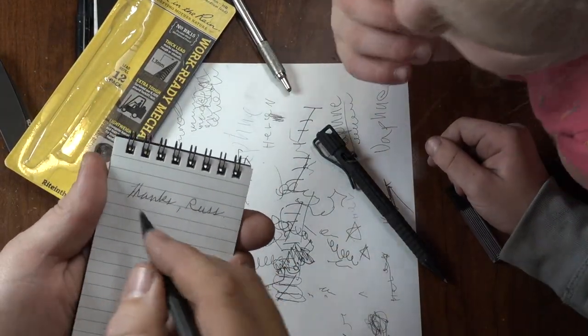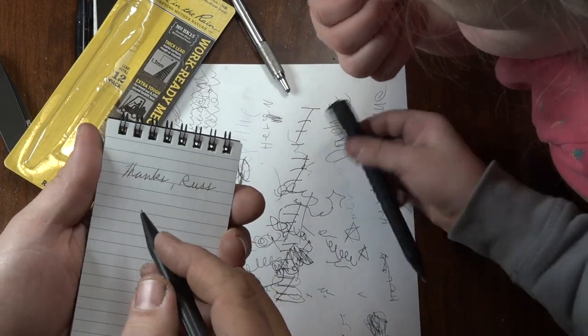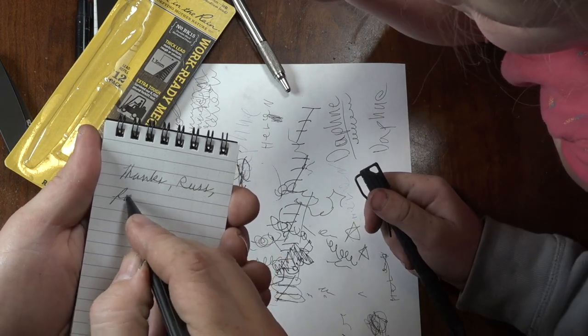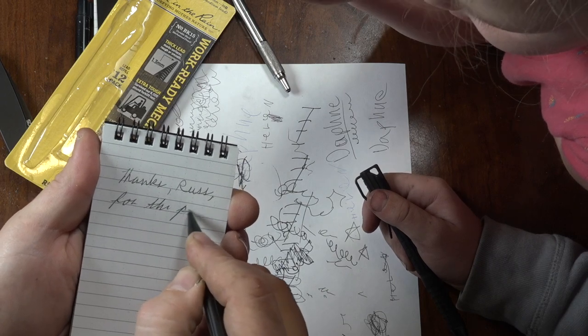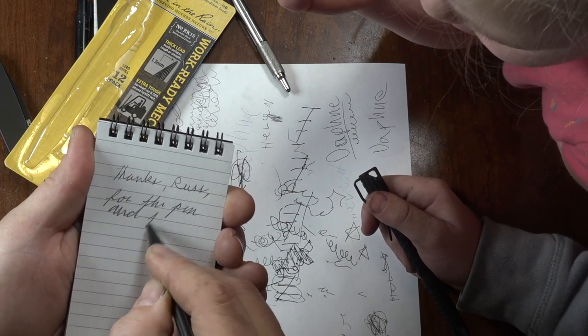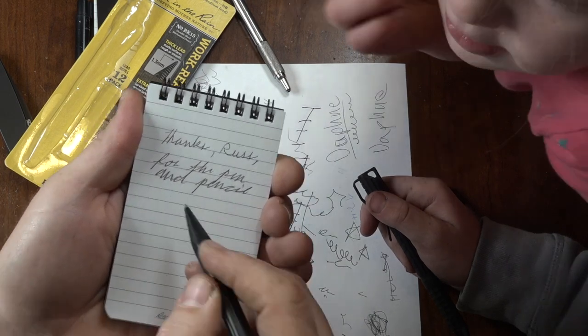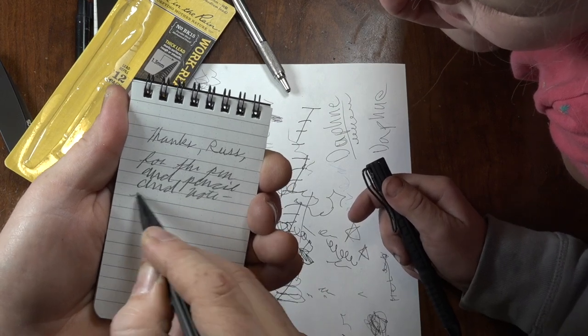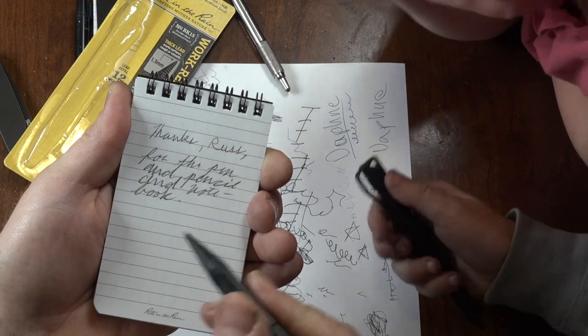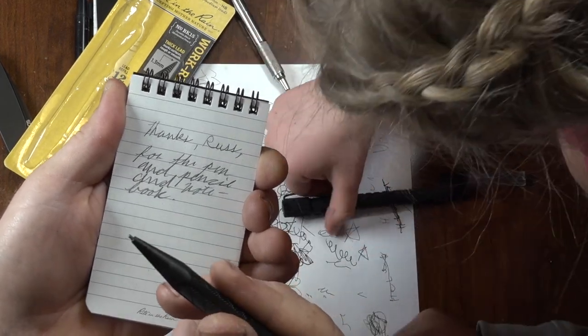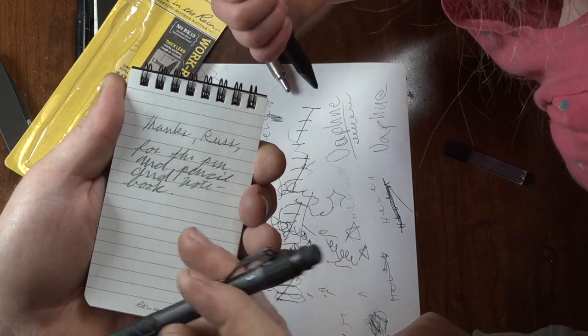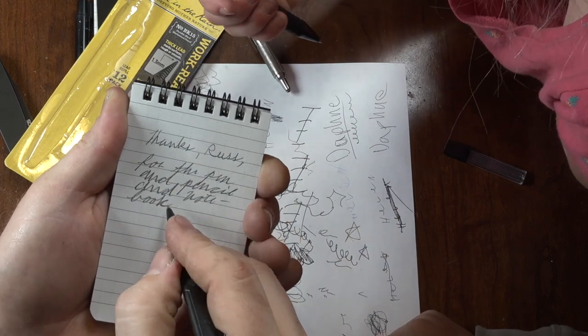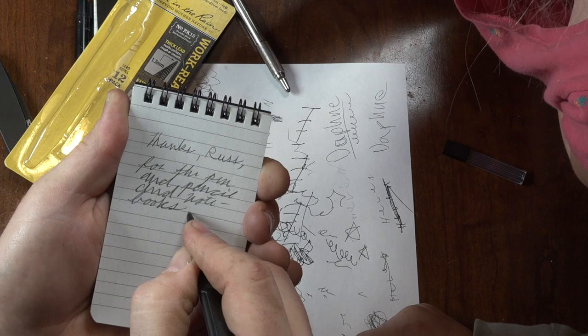Right in the book. Andrew? We wrote thanks, Russ. What should we write to Uncle Russ? For the pen. Thanks, Russ, for the pen and pencil. And notebook. Does anybody know how to spell notebook? Note dash book. This pencil writes nicely. Okay? It's starting to take a good shape. You know what? Note book. I should probably write notebooks. I'm going to erase that period. Put notebooks. Put an S.